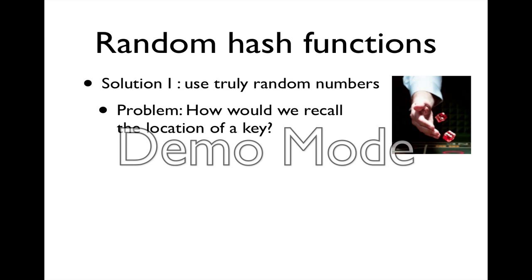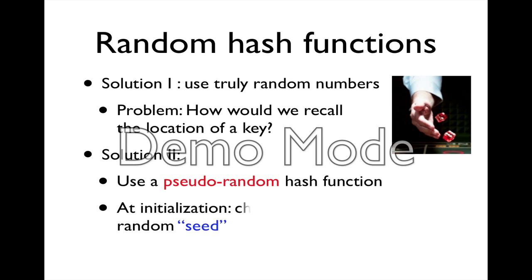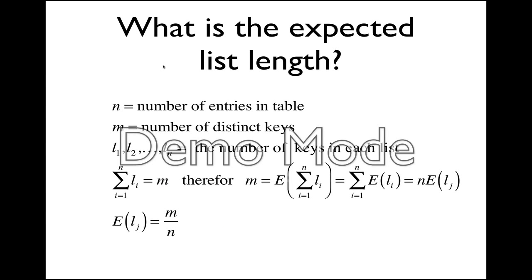The solution that we use is that we have something that is what we call pseudo-random, and in a different video I'll explain what that is. But basically we'll have some very short seed that is really random that we choose ahead of time, and then using that seed will generate the hash value for each key.